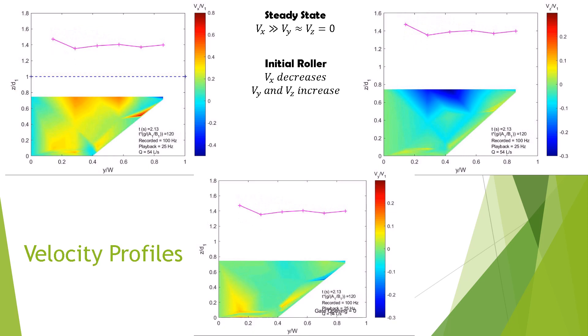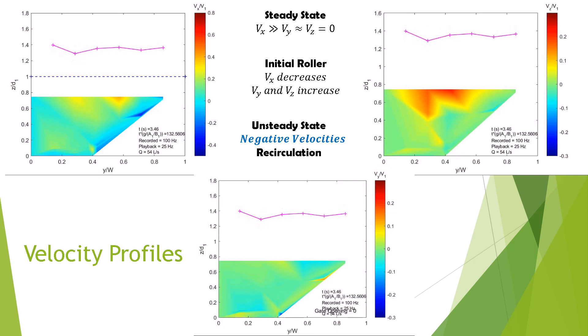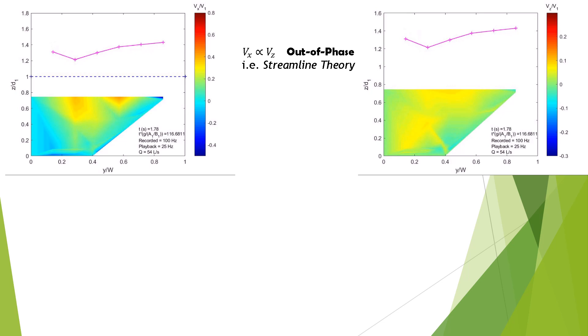The introduction of negative velocities is an indicator of recirculation. As expected from streamline theory, Vx and Vz are out of phase to each other.